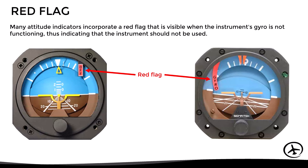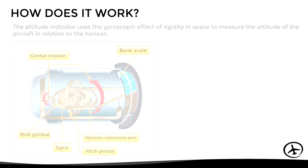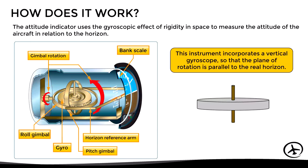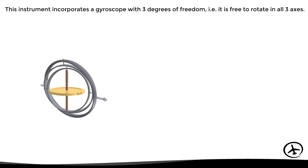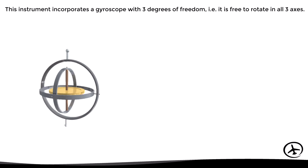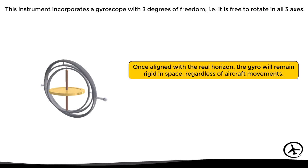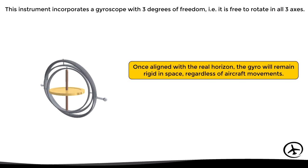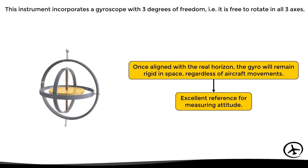Now let's see how the attitude indicator works internally. It uses the gyroscopic effect of rigidity in space to measure the aircraft's attitude in relation to the horizon. The instrument incorporates a vertical gyroscope so that the plane of rotation is parallel to the real horizon. The gyro has three degrees of freedom, meaning it is free to rotate in all three axes. Once aligned with the real horizon, it remains rigid in space regardless of aircraft movements — making it an excellent reference for attitude measurement.